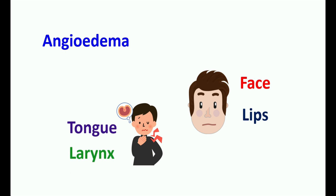Angioedema involves swelling of tissues under the skin. It may affect the face and lips, leading to unexpected swelling. It may also affect your tongue as well as larynx, which may produce trouble swallowing as well as trouble breathing, potentially causing an obstruction in the airway. Therefore, if you observe any unexpected swelling with use of lisinopril, immediately discontinue the drug.